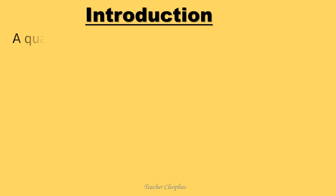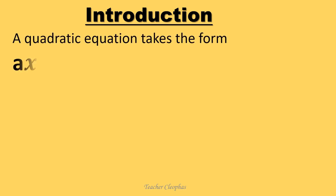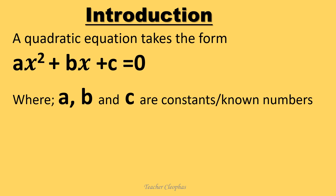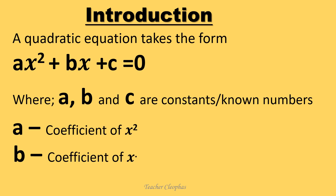Introduction. A quadratic equation takes the form ax squared plus bx plus c equals to zero, where a, b and c are constants or known numbers. A is referred to as the coefficient of x squared, b is the coefficient of x, and a cannot be zero because if a is zero then the squared part of the equation will be eliminated and the equation is no longer quadratic.